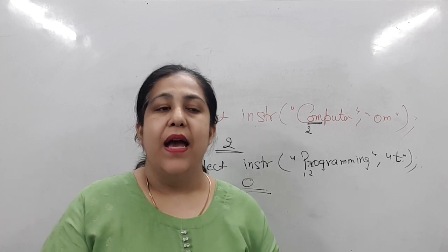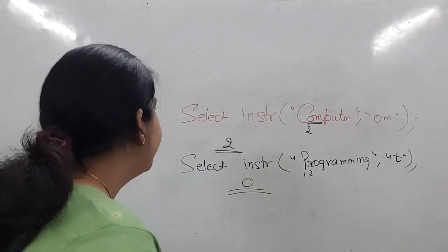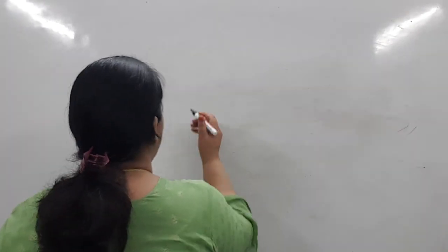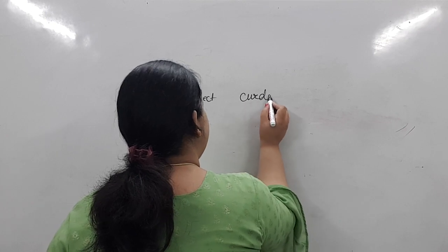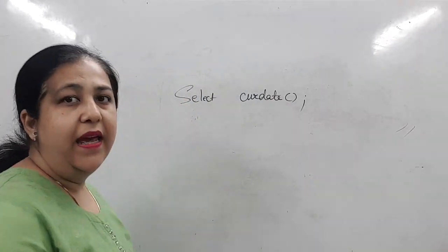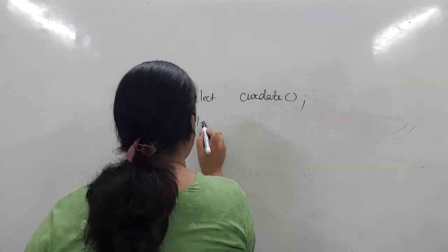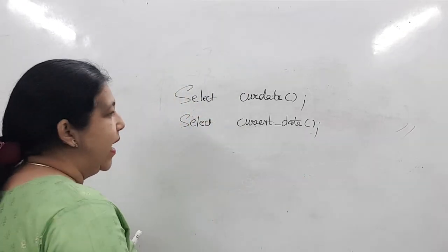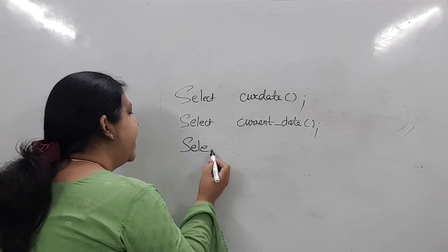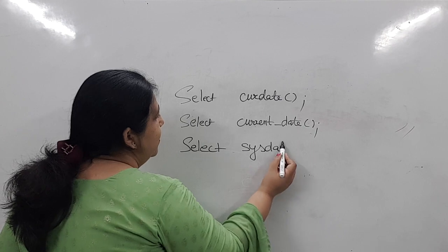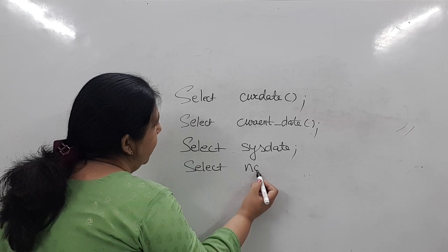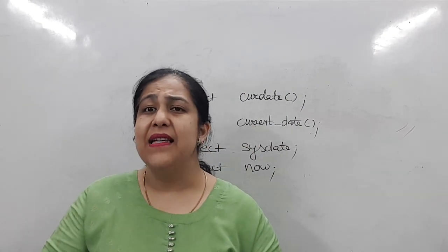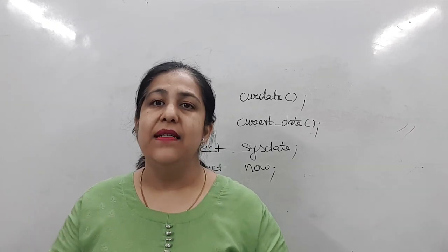Moving on to date functions: if you want to see today's date only, you write SELECT CURDATE(). If you write SELECT NOW() or DATE, you get both the current date and time. Whereas CURDATE() shows you only the date, not the time.